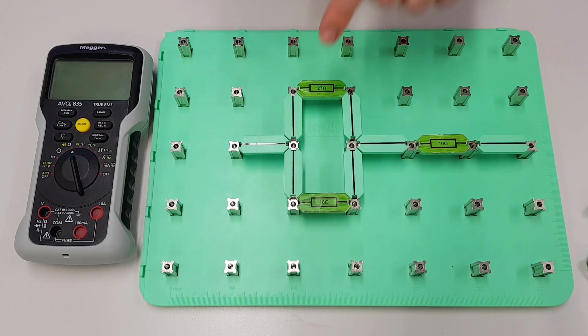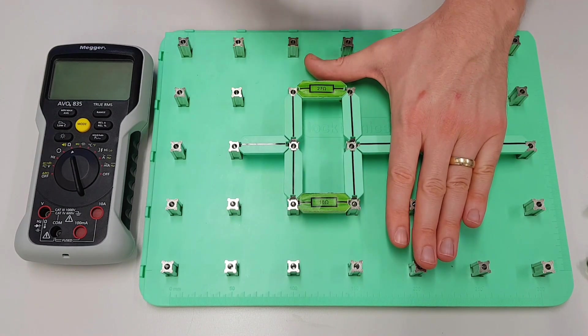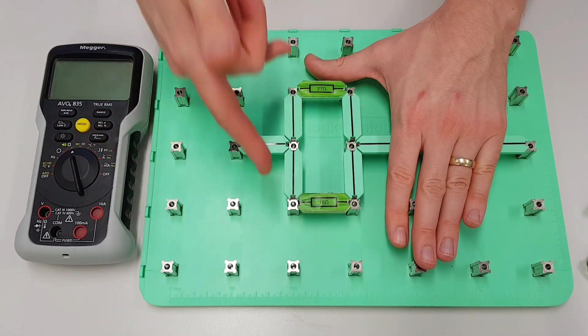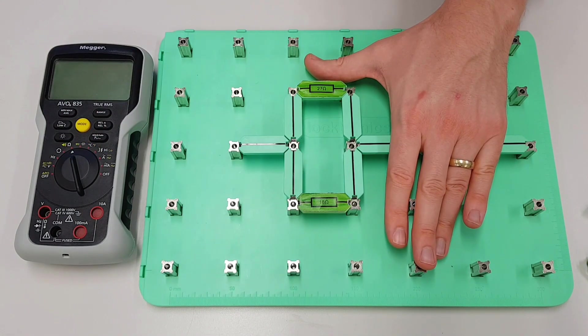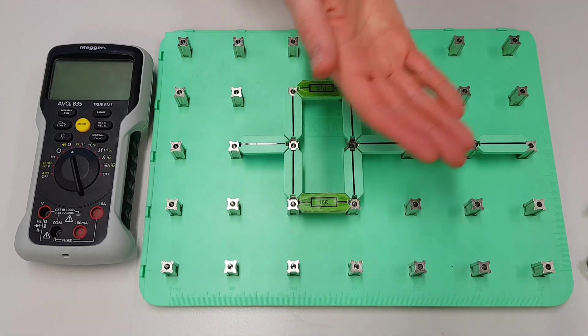So what we're going to do is, in order to calculate what the parallel part of the circuit is, we're just going to use our very simple product over sum method. We've got two resistors connected in parallel with different values, so we'll be able to do that very easily and then we'll be able to figure out what the value of the circuit is once we have the additional series resistor connected to it. So let's go and have a look at what that calculation looks like.